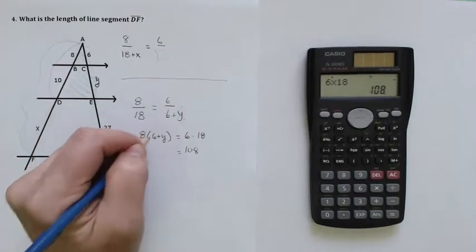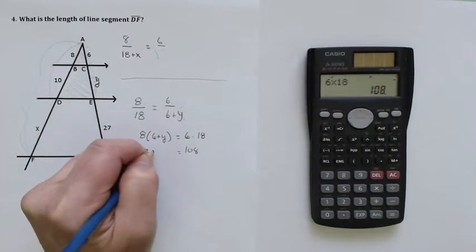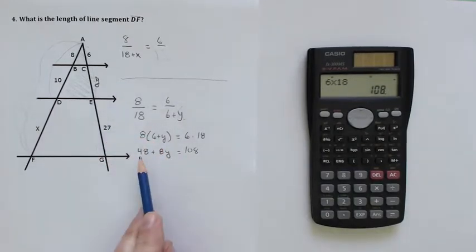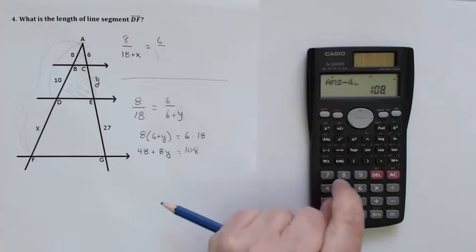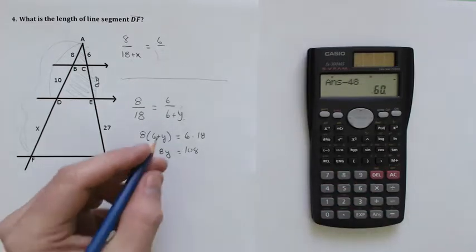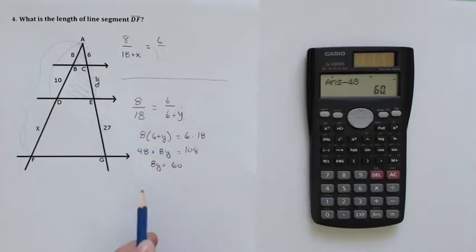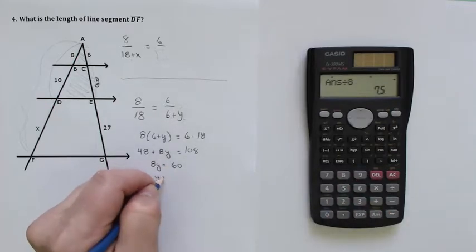And now the left side, 6 times 8 is 48 plus 8Y. I'm going to subtract 48 from both sides, and that's going to leave me with 60, so 8Y is equal to 60. I just subtracted 48 there and 48 there, and now I'm going to divide both sides by 8, and I get 7.5 as my Y.